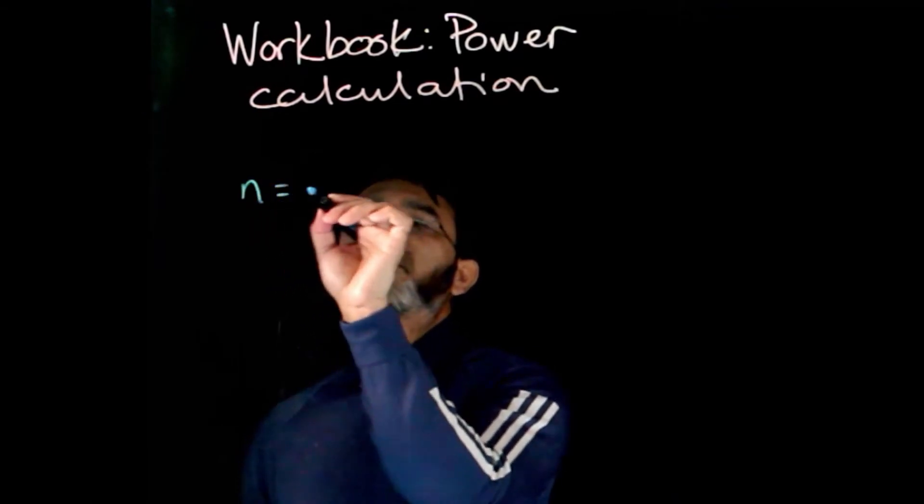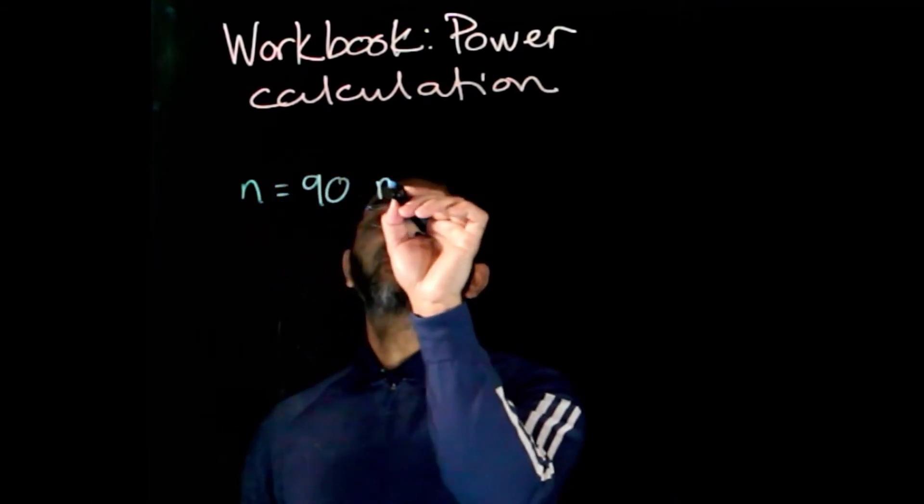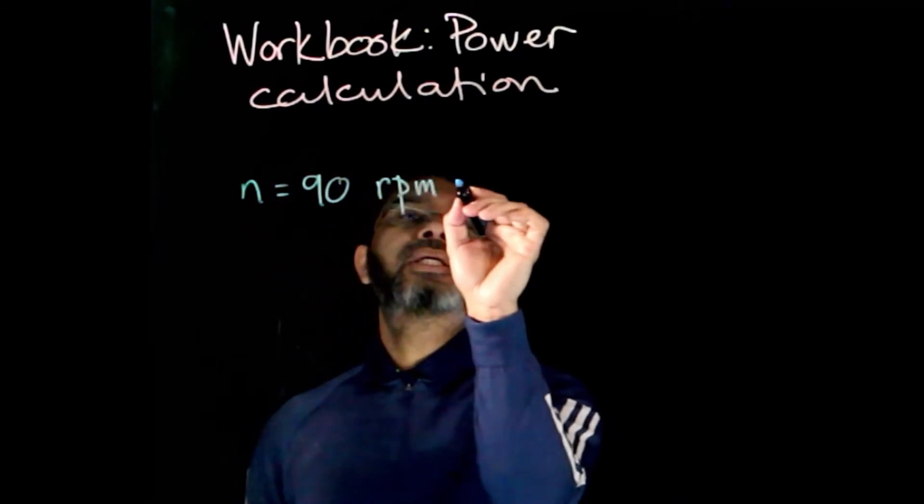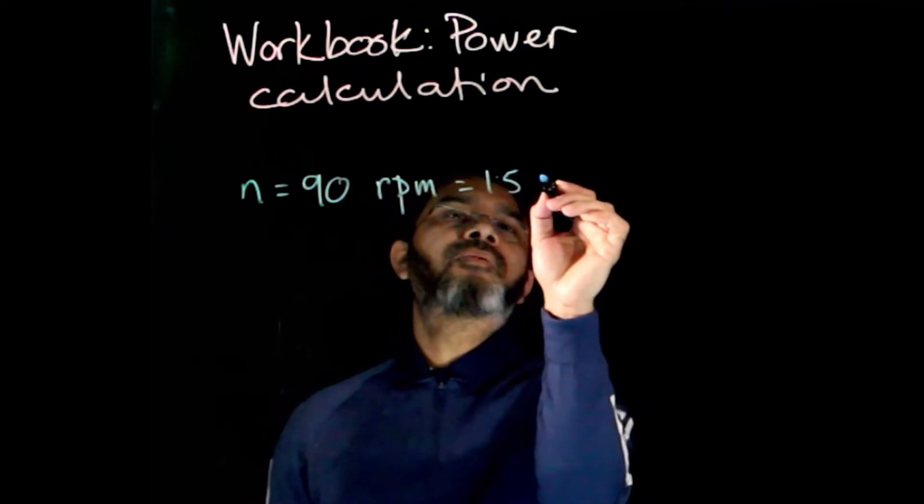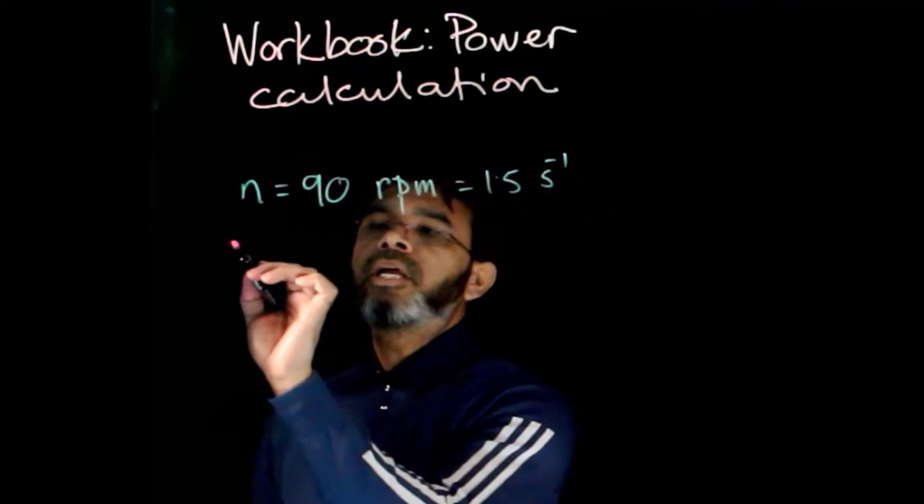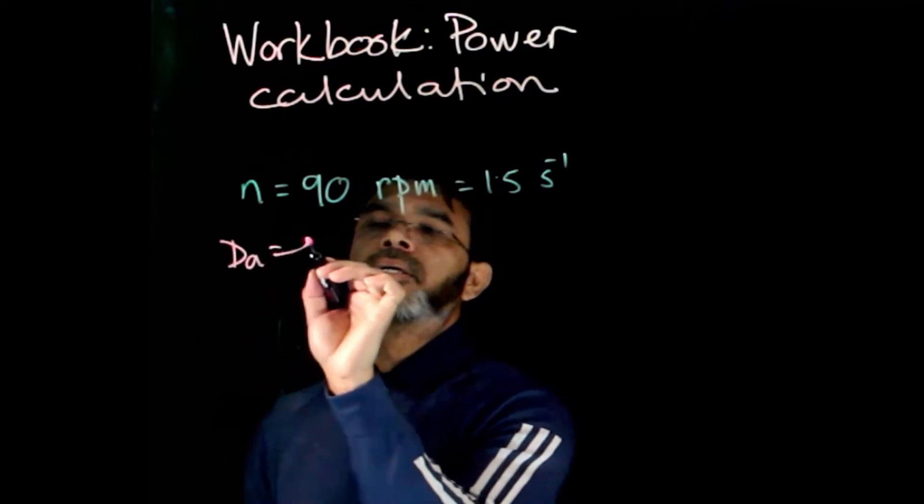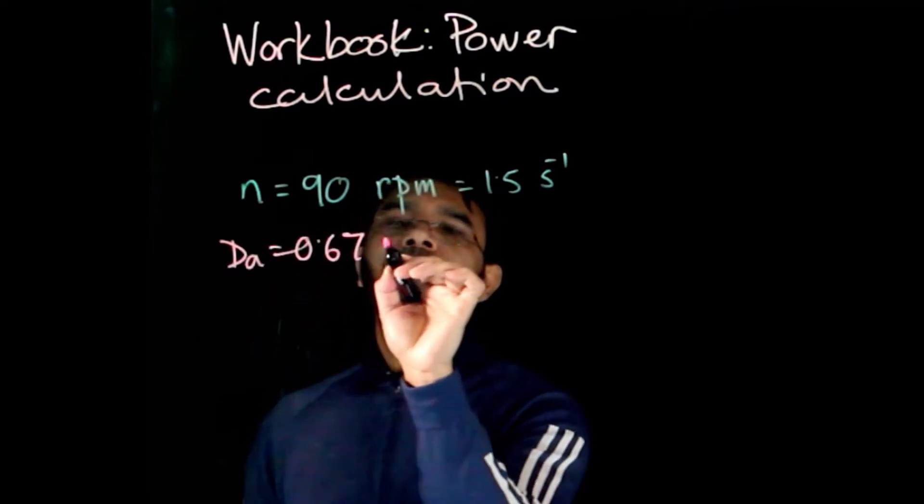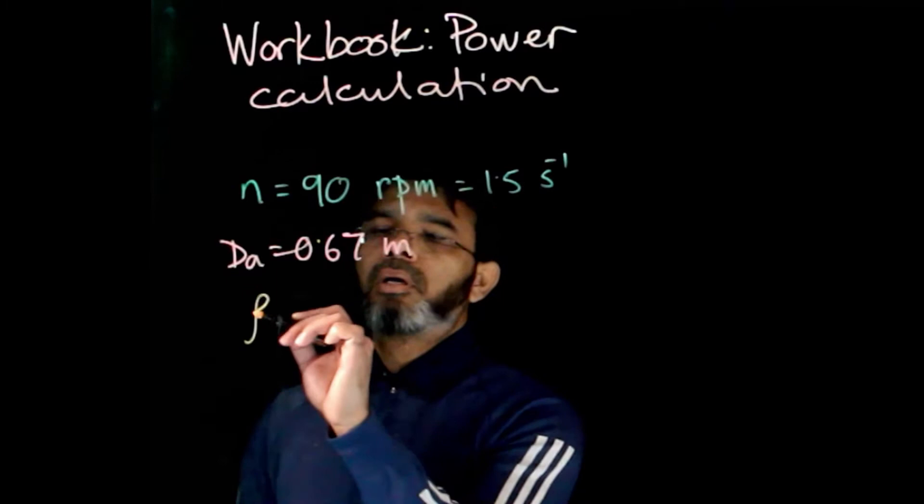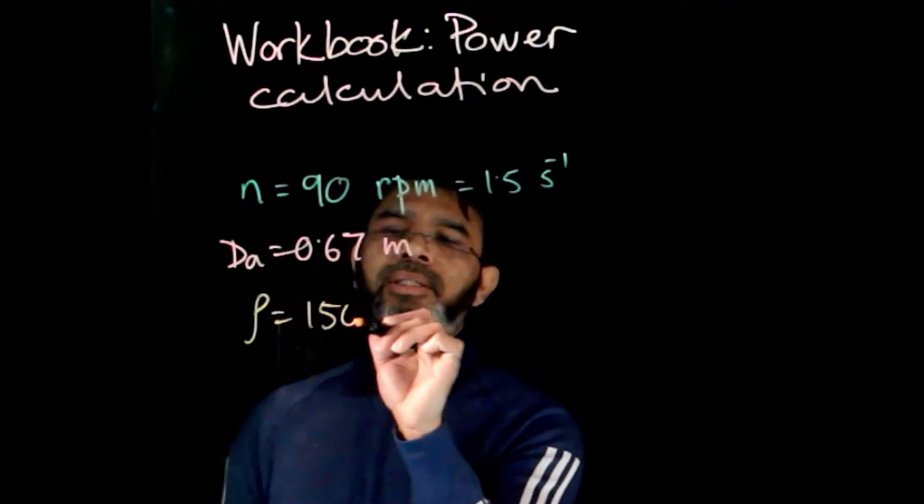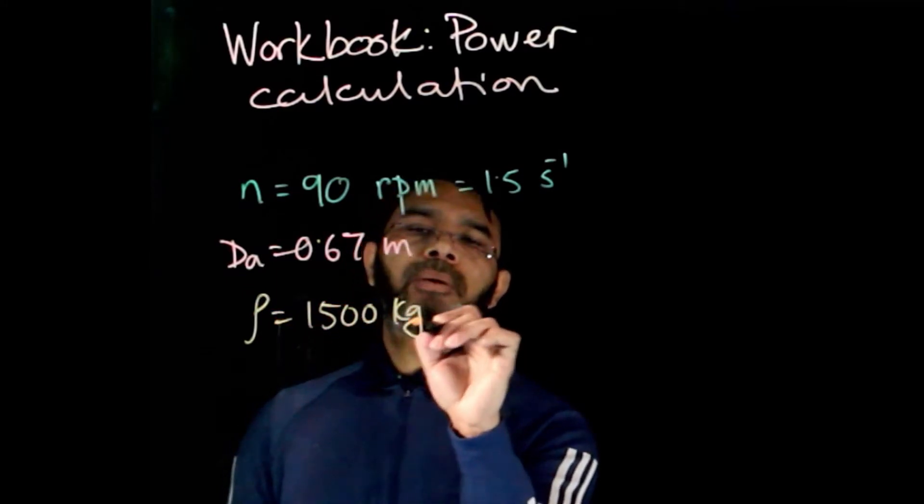For this case, we have n = 90 rpm, which equals 1.5 per second. DA is given as 0.67 meters. Rho is 1500 kg/m³.